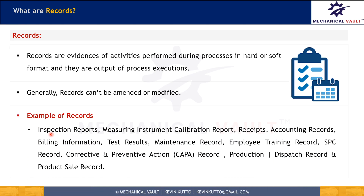Some examples of records could be your birth certificate, driving license, bank card, education records, legal filings of the company, tax returns, inspection reports, measurement instrument calibration reports, payment receipts, accounting records, billing information, test results, maintenance records, employee training records, statistical process control records, corrective or preventive action records, production records, dispatch records, and product sales records.